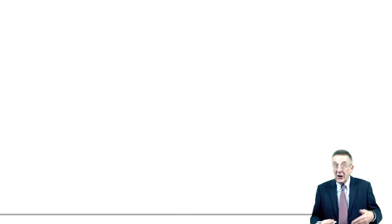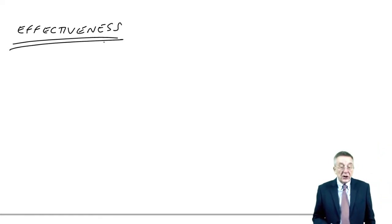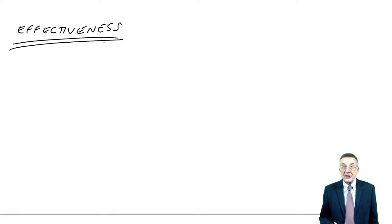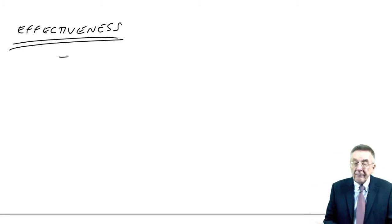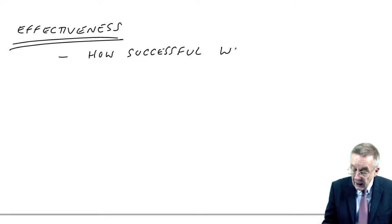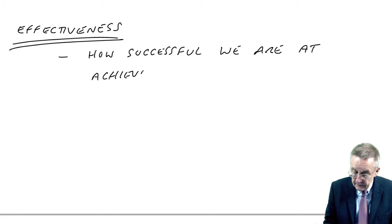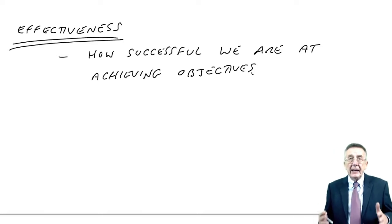The other two E's are much more important, and so many people get confused over which is which. I'm going to start with effectiveness first. Effectiveness is about how successful we are at achieving our objectives. Using a hospital as an example: the objective of a hospital is ultimately to try and make people better.